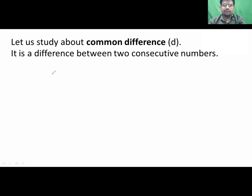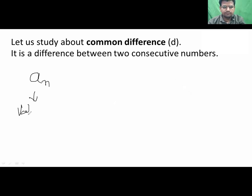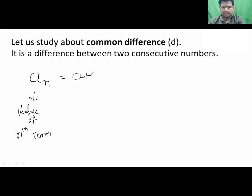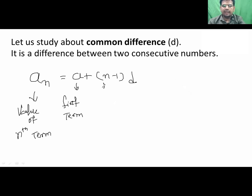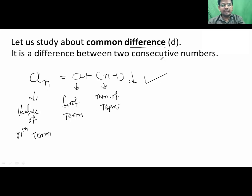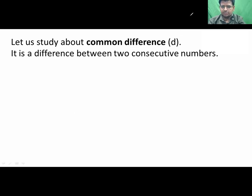Now with the help of common difference, if we need to find out An — the value of the nth term of an AP — the formula is An = a + (n−1) × d, where a represents the first term of the AP, n means the number of terms, and d means the common difference. With this formula we can find out the value of any nth term.